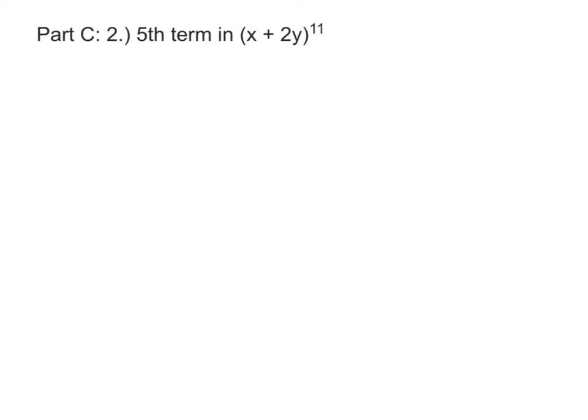Now, if we want to find the fifth term in x plus 2y to the 11th, we're going to start out with combinations. The power is 11, and since we're looking for the fifth term, this is going to be a 4.